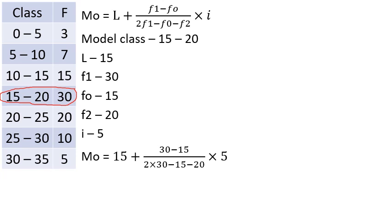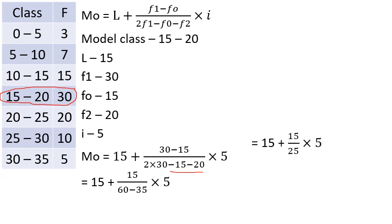Substituting values: 15 plus (30 minus 15) divided by (2 × 30 minus 15 minus 20). That gives us 15 plus 15 divided by 25, which equals approximately 18. So the result is 18.